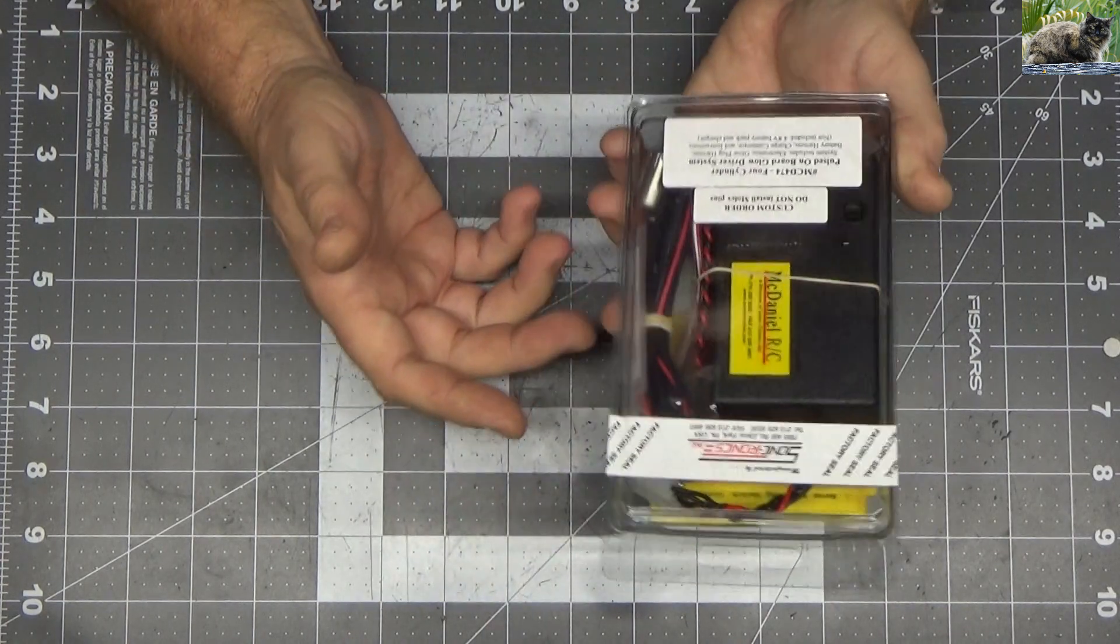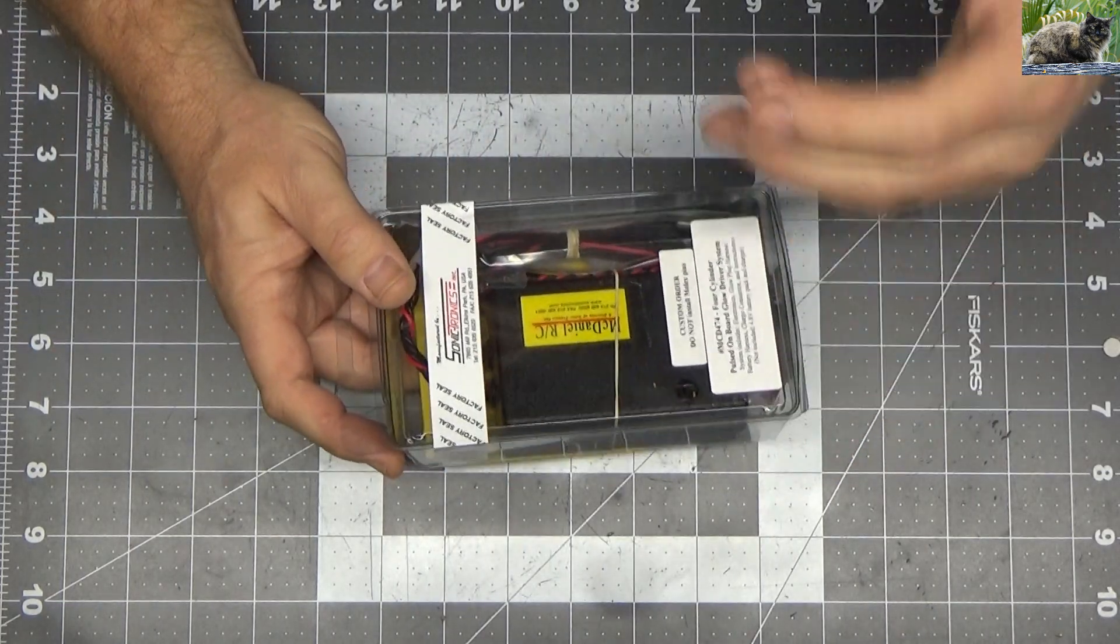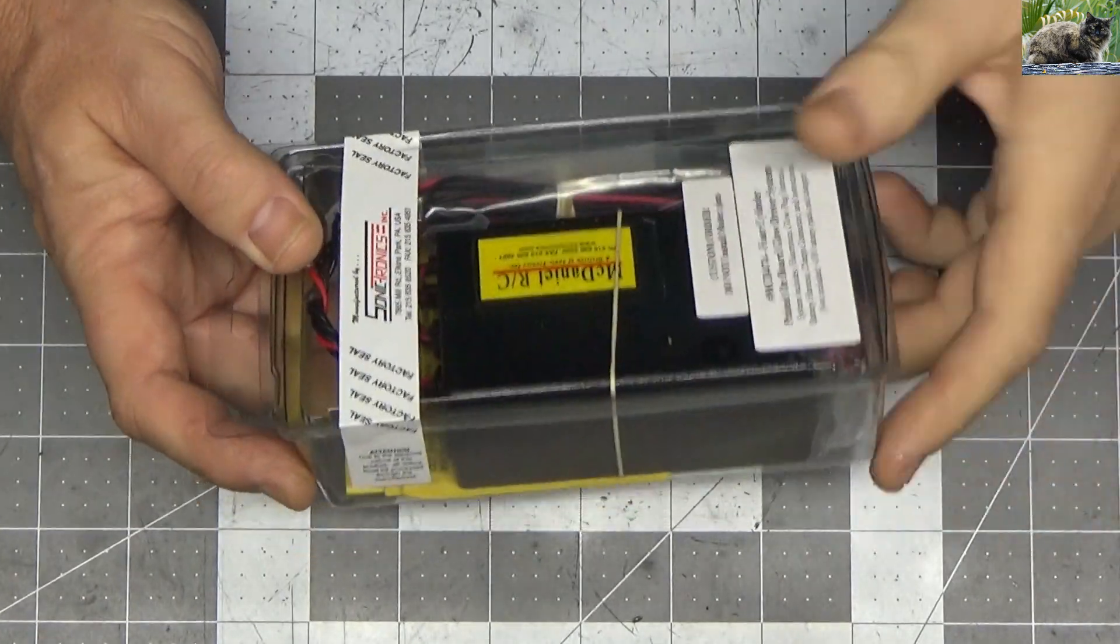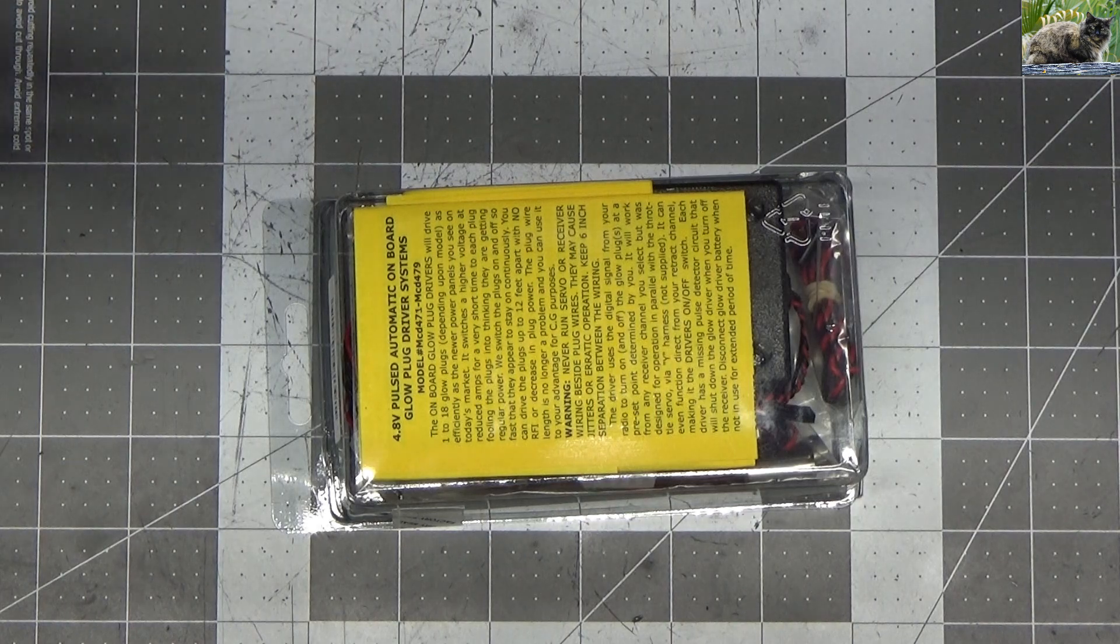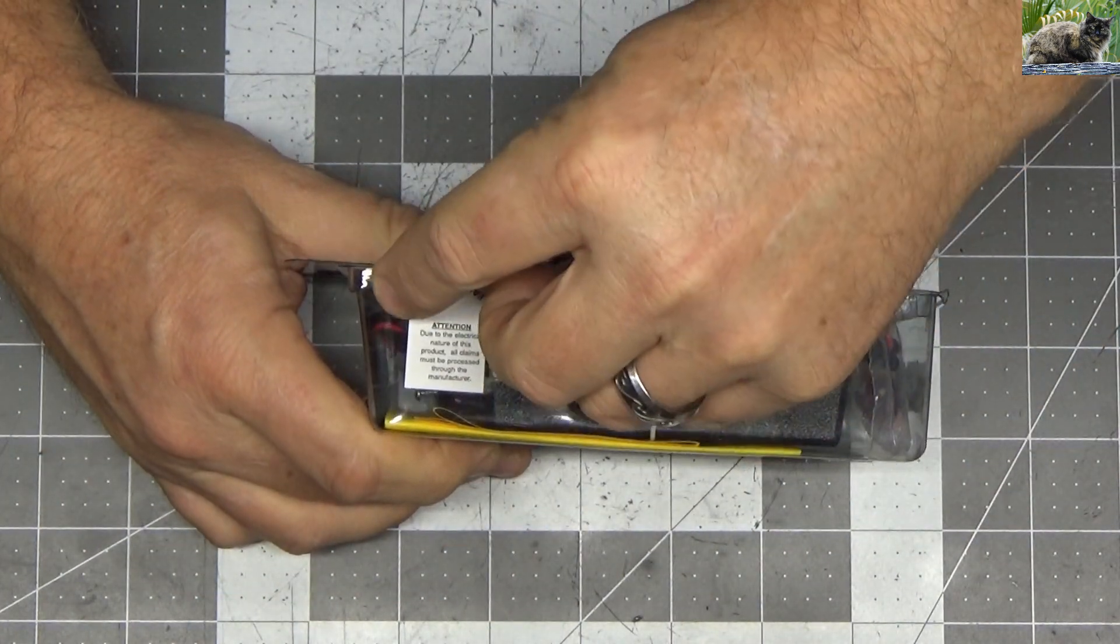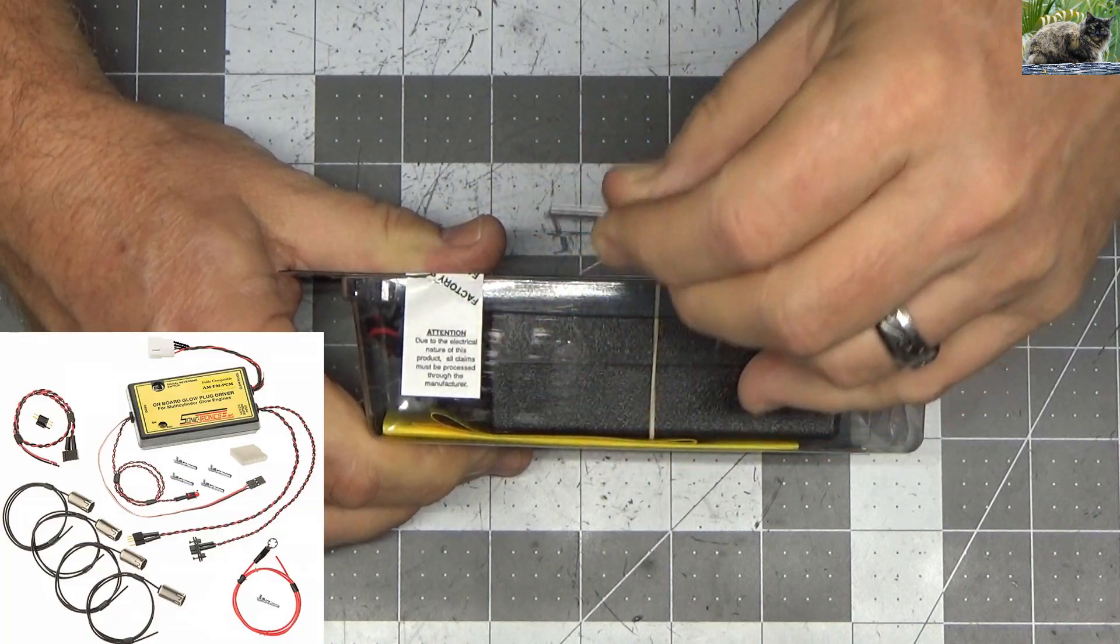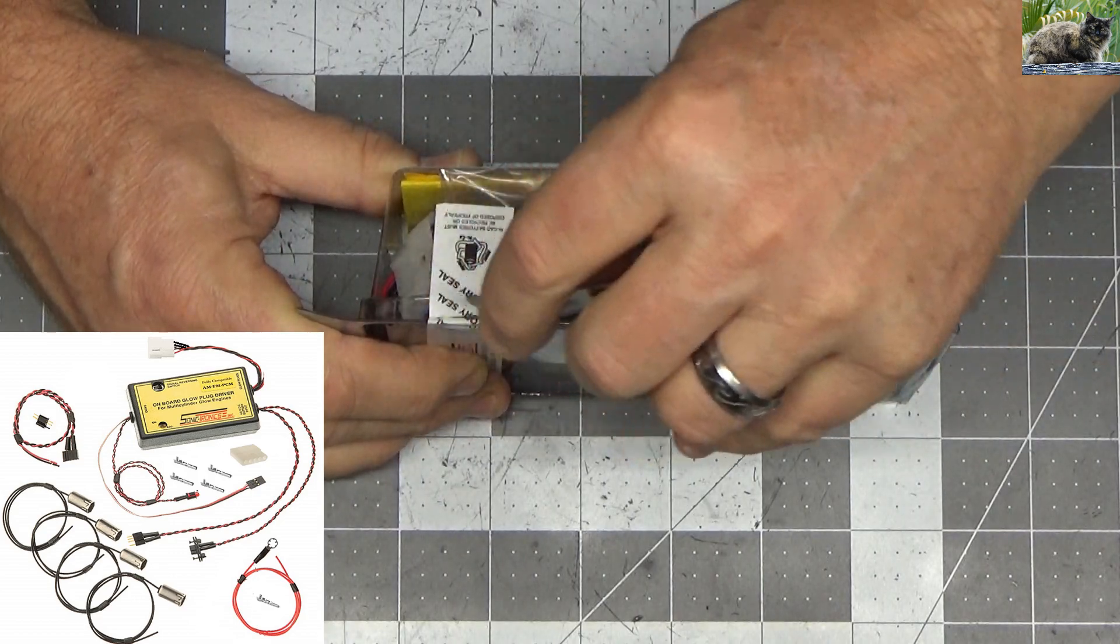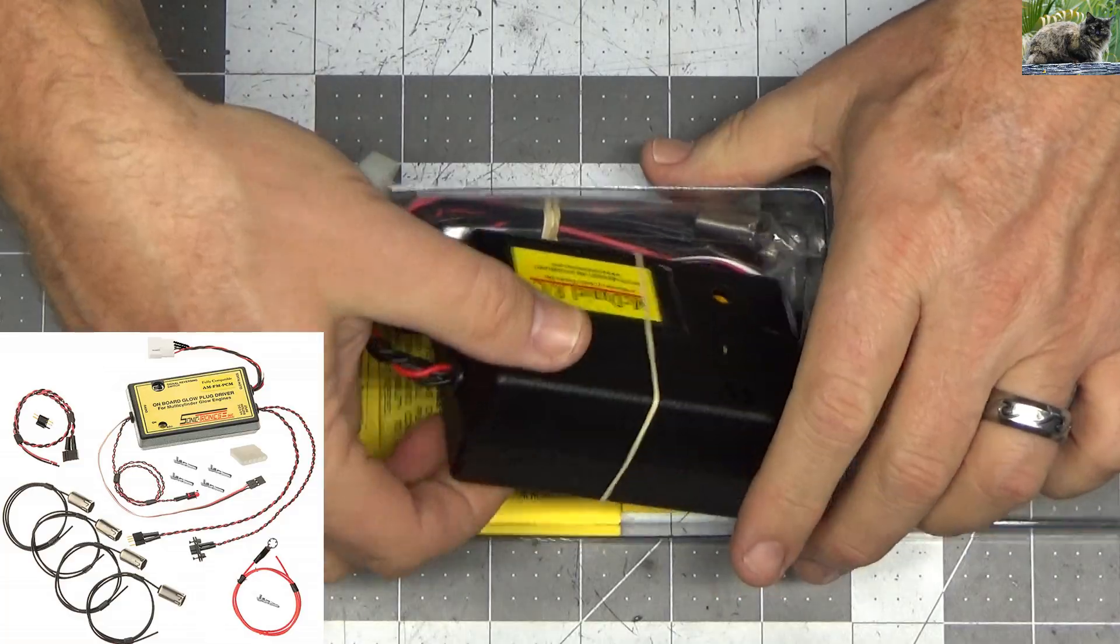What I bought today was an onboard glow system. This one is the 474 model which is for a four-cylinder engine. So I thought I'd just go ahead and open this up and see what's inside. Obviously I know what's inside but there's a picture that I can post right here and we'll compare that against what I've got inside this package.